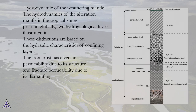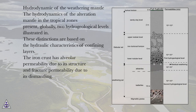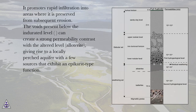The hydrodynamics of the alteration mantle in the tropical zones present, globally, two hydrogeological levels. These distinctions are based on the hydraulic characteristics of confining layers. The iron crust has alveolar permeability due to its structure and fracture permeability due to its dismantling. It promotes rapid infiltration into areas where it is preserved from subsequent erosion.